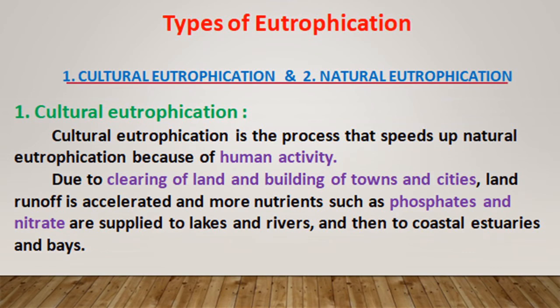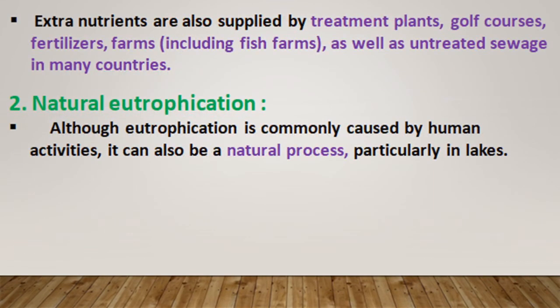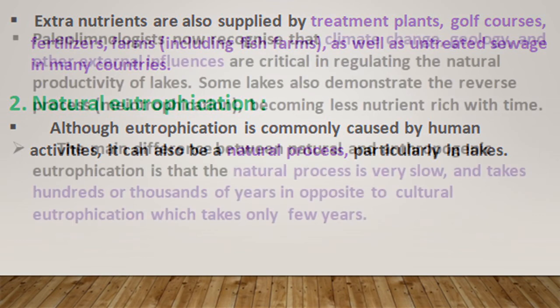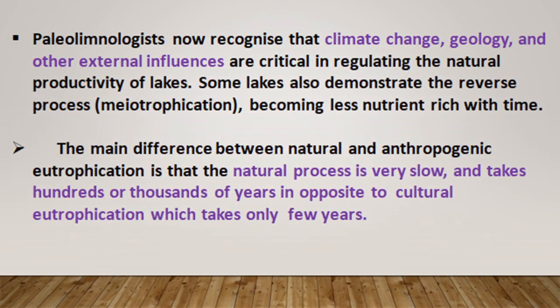In cultural eutrophication, human activities are responsible for adding nutrients to water bodies, whereas in natural eutrophication, naturally occurring events are the cause. A key difference is that the natural process is very slow and takes hundreds or thousands of years, as opposed to cultural eutrophication which takes only a few years.